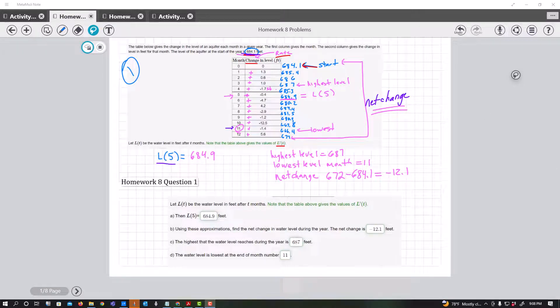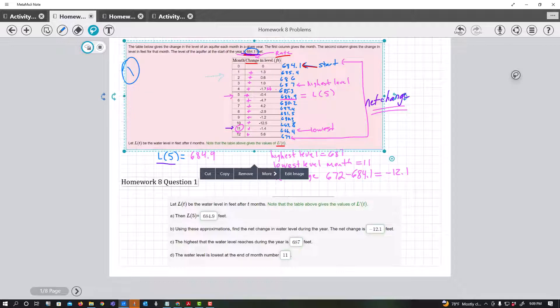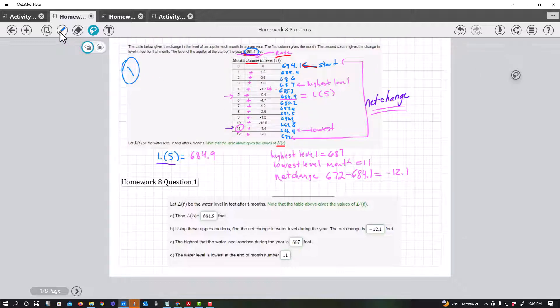Alright, people have spoken, y'all wanted a video. This is homework eight, and looking at the first problem, this looks very complicated but it's actually not. It's just adding and subtracting. They give you a starting point here at 684.1, and then you just do what the table tells you to do. If it's positive you add, if it's negative you subtract.